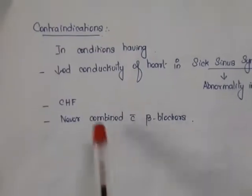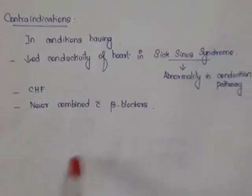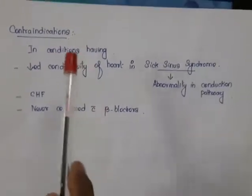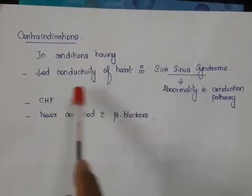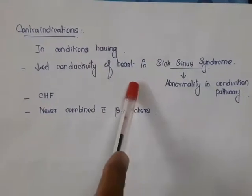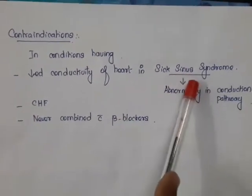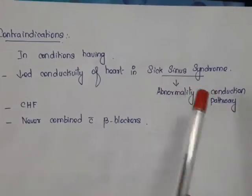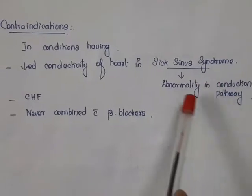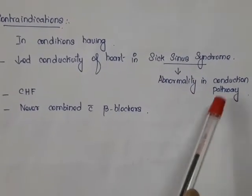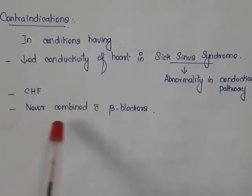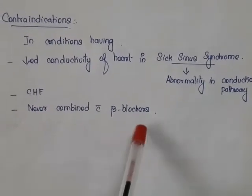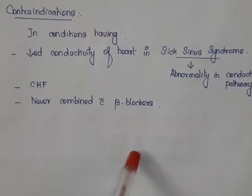Contraindications for verapamil and diltiazem include conditions with decreased conductivity of the heart, mainly sick sinus syndrome — where there is an abnormality in the conduction pathway — and congestive heart failure. They should also not be combined with beta-blockers.